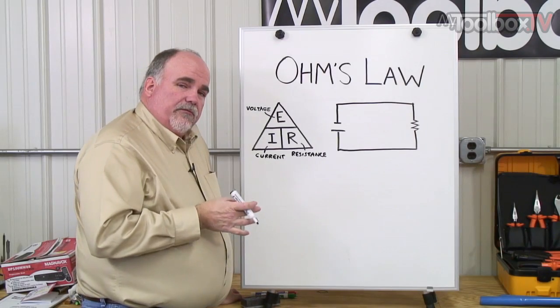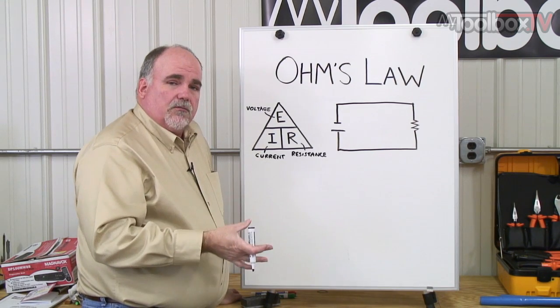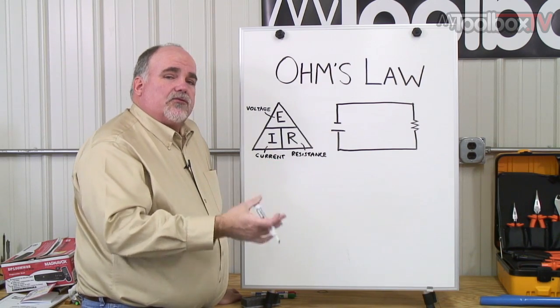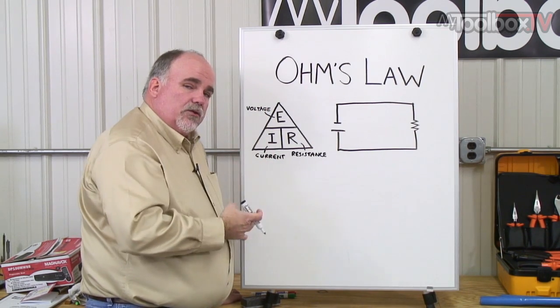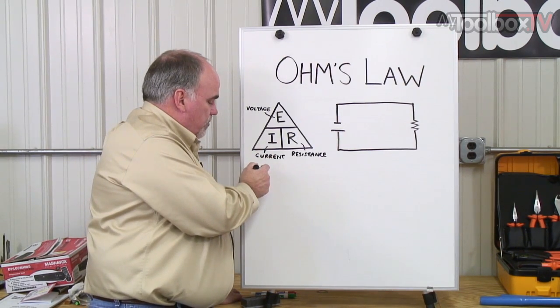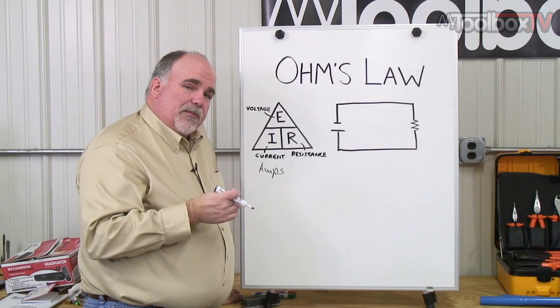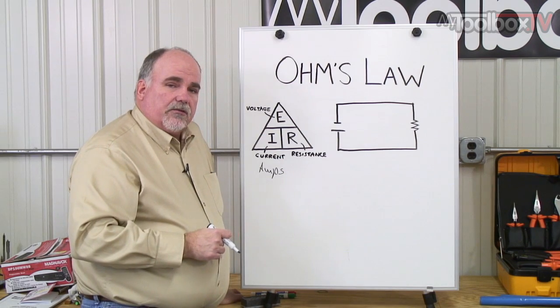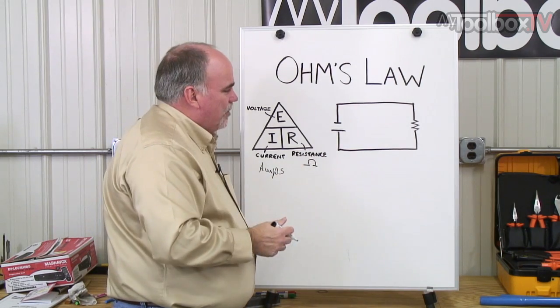As you might remember from earlier videos, voltage is the pressure in a circuit. Voltage doesn't move. Voltage is applied to things. Voltage makes current move, causes electron flow. So voltage applied to a circuit will cause current to flow, the moving part of electricity. Voltage is measured in volts. Current is measured in amps. Resistance, as you might recall, is the opposition to current flow. Let's see how all these work together in a circuit. Resistance is measured in ohms. That's a pretty dandy symbol there for the Greek letter omega.